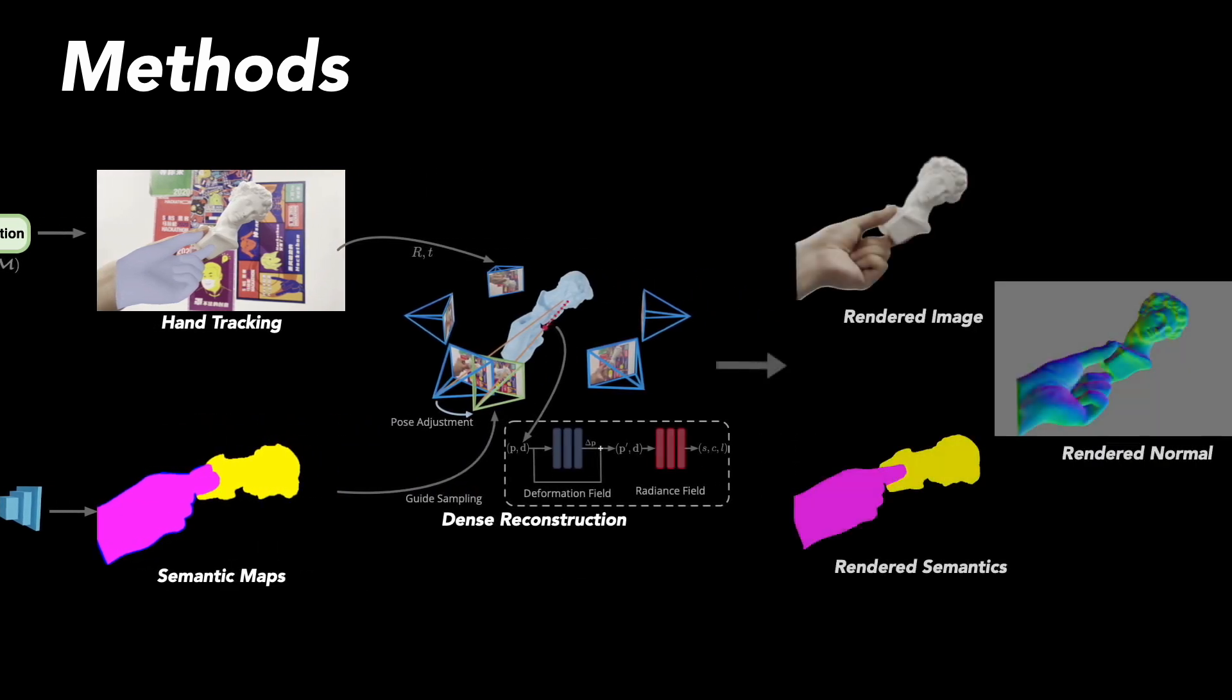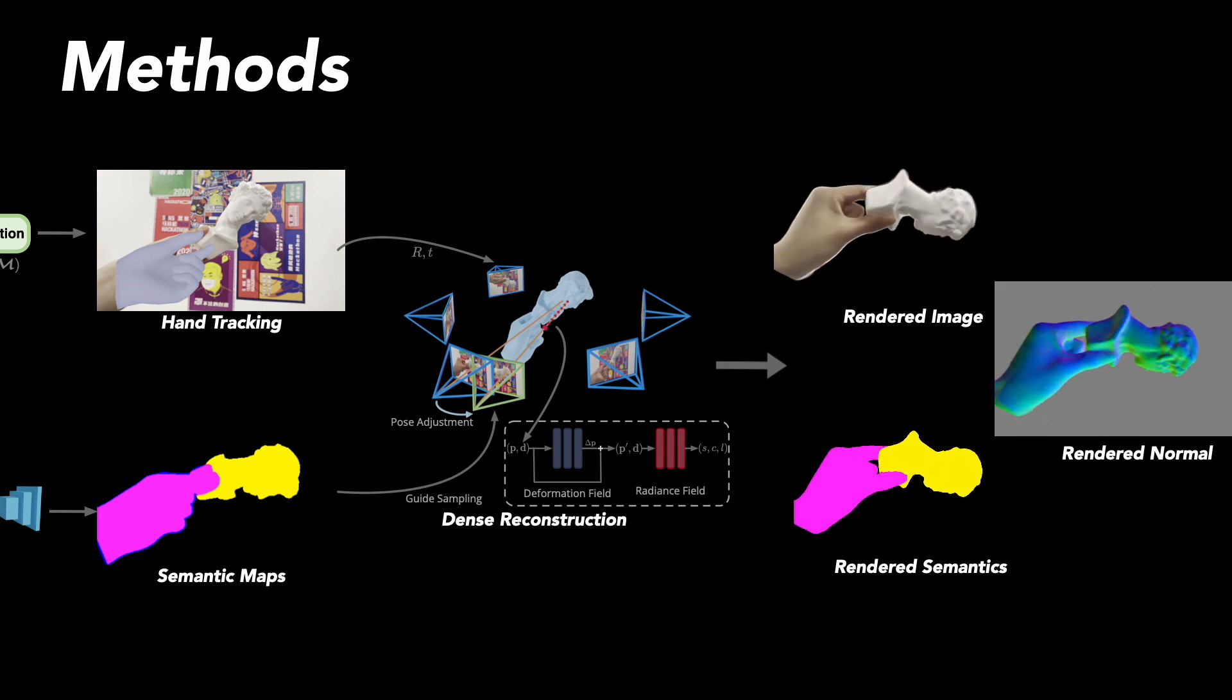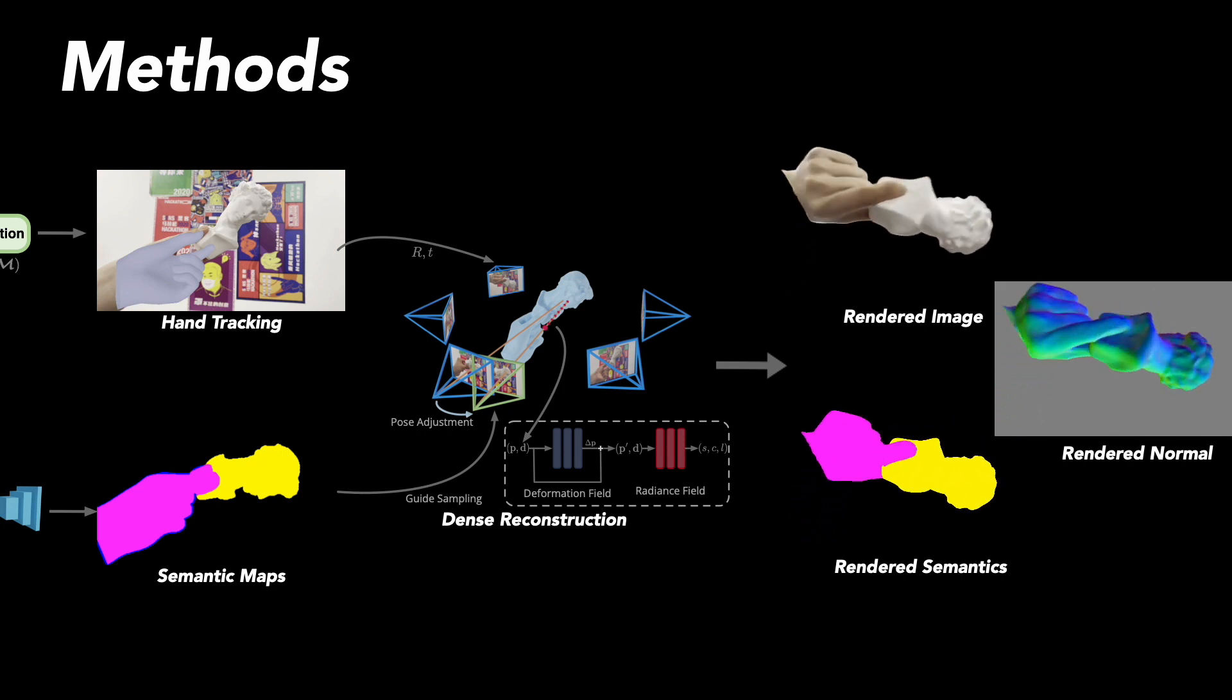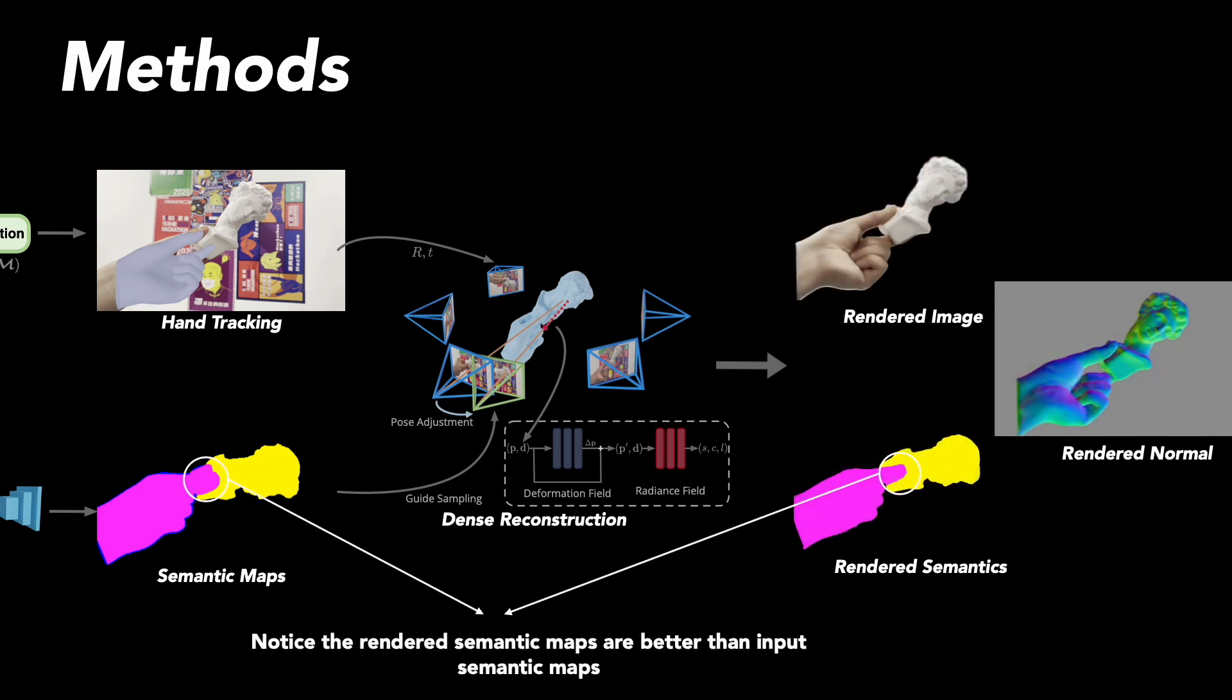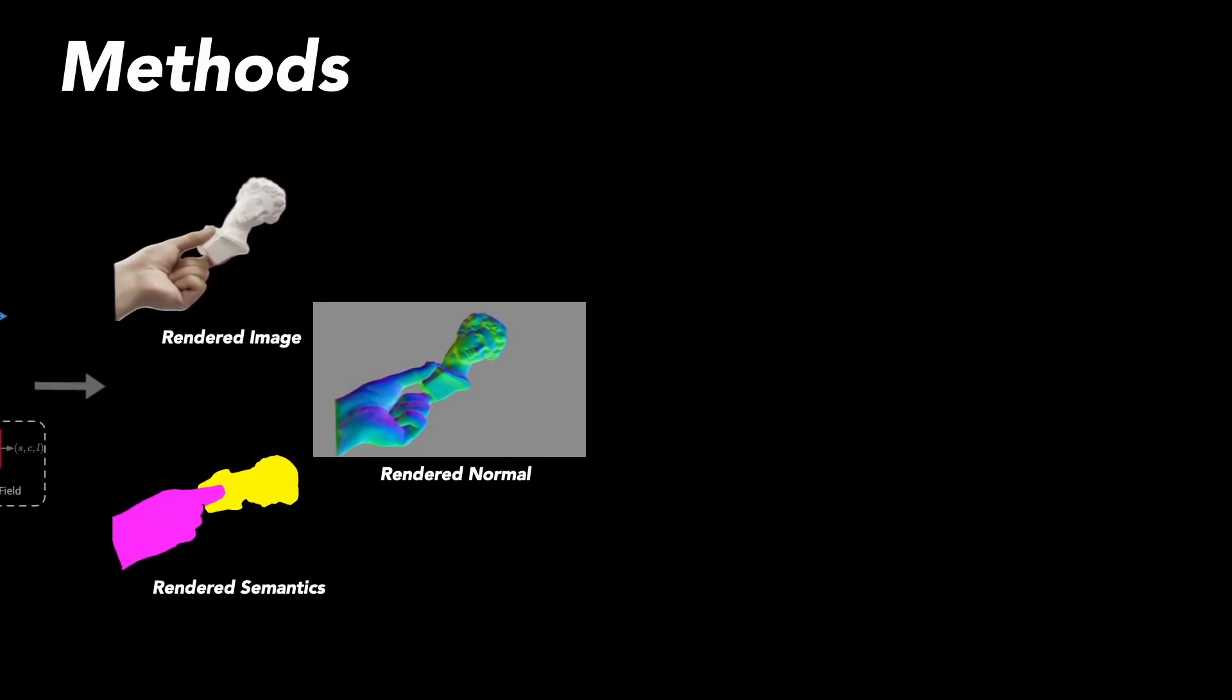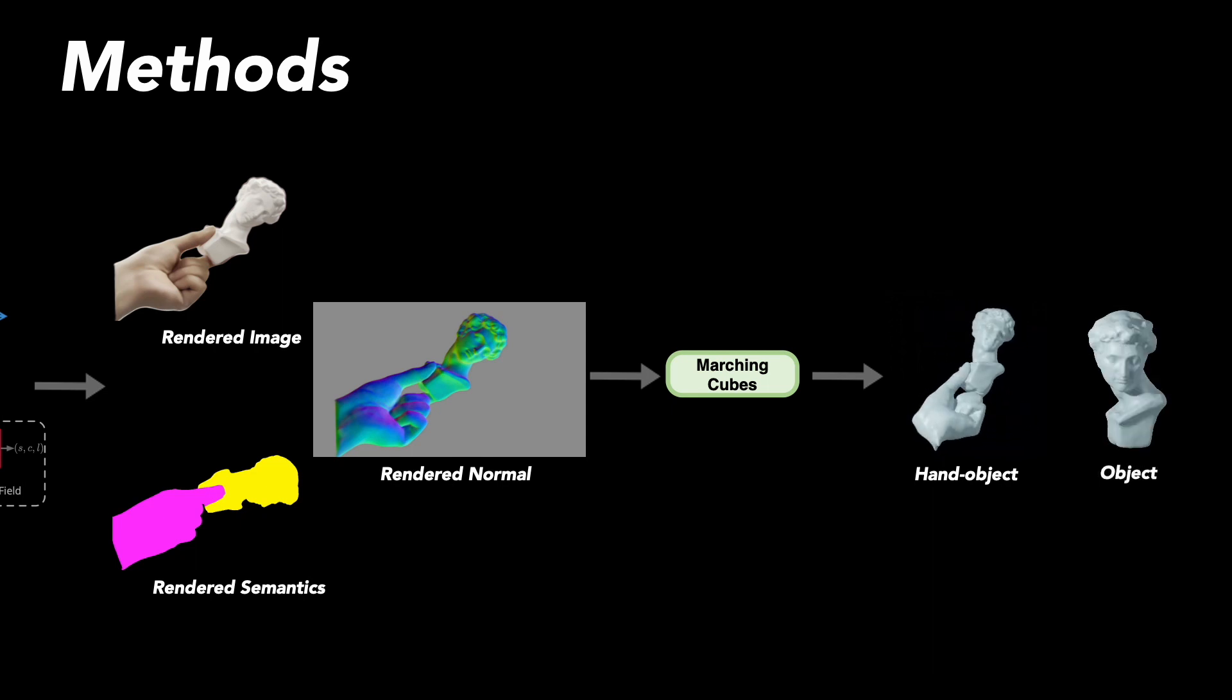After that, we leverage differentiable SDF rendering to optimize the proposed hand object radiance field. Three additional modules are proposed. Notice the rendered semantic maps are better than input semantic maps. In the learned neural radiance field, we use marching cubes to extract the 3D geometry of the hand and object. 3D semantic information is used to separate hand and object. After separating the hand and object, we use Poisson reconstruction to smoothly fill holes.